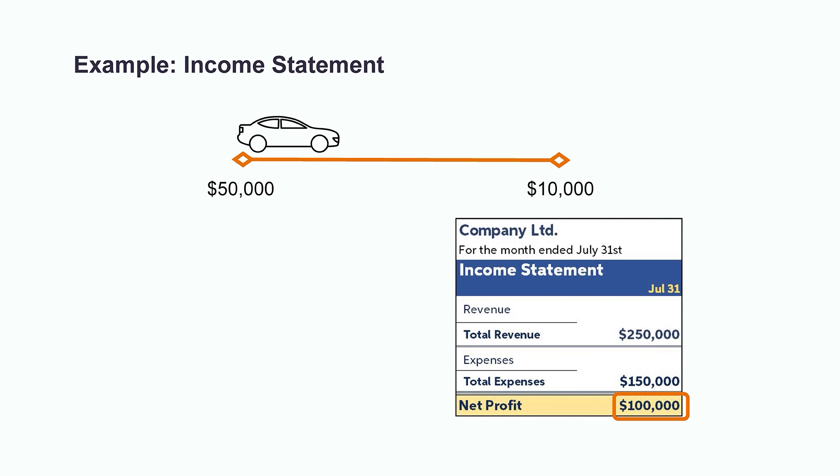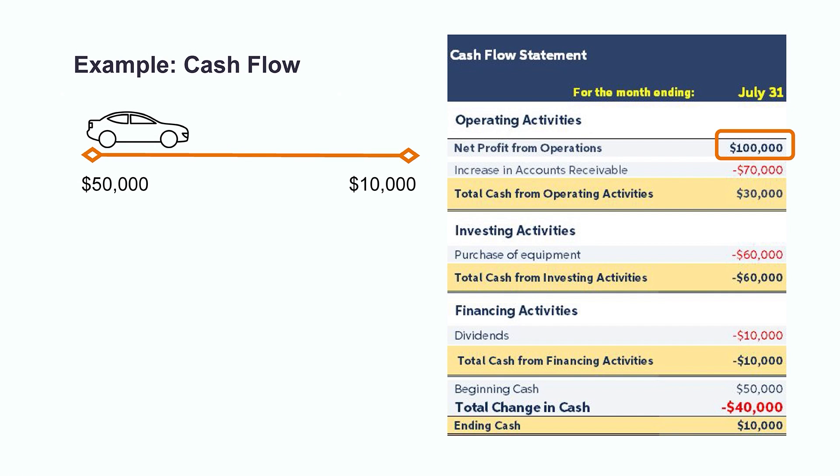Wait a second — this doesn't seem right. We were expecting to see a $40,000 loss. However, the July income statement is showing a net profit that month of $100,000. Well, how can that be? Remember, profit does not equal cash flow. We may not have received all those funds in cash yet this month, due to some of it still being outstanding. Either way, we still don't have enough information yet. So let's see if the statement of cash flows holds the answer. We're trying to determine what happened during the month that caused the company's total cash to go from $50,000 down to $10,000.